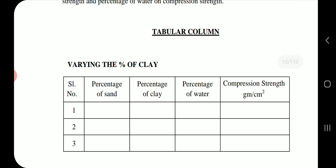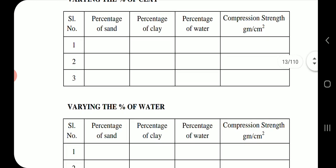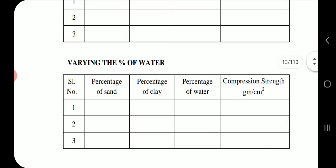Tabular column for varying the percentage of clay: columns include serial number, percentage of sand, percentage of clay, percentage of water, and compression strength in grams per square centimeter.